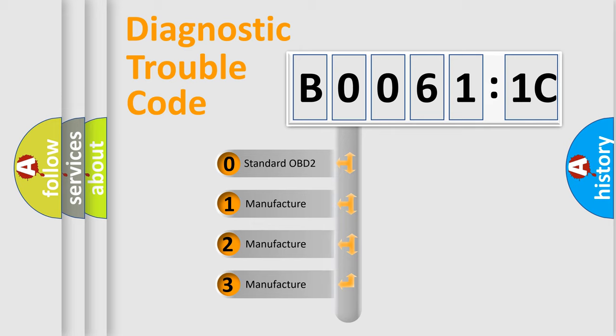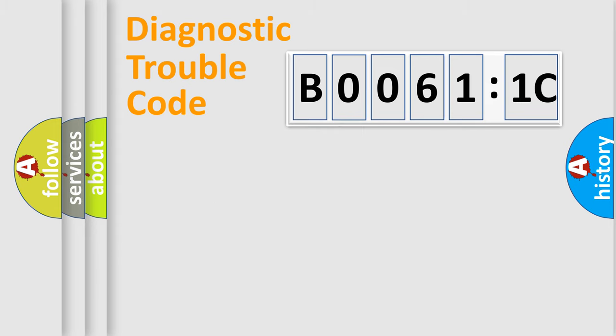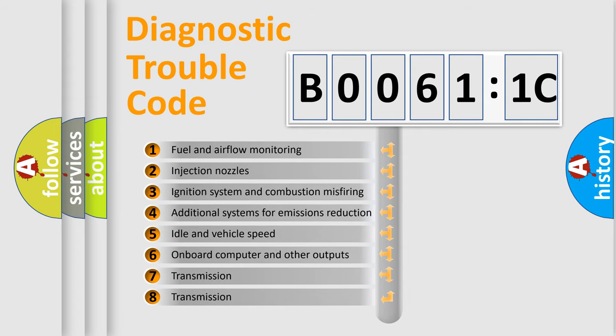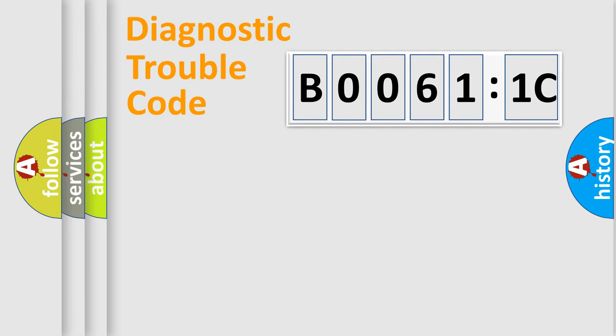If the second character is expressed as zero, it is a standardized error. In the case of numbers 1, 2, 3, it is a manufacturer-specific error. The third character specifies a subset of errors. The distribution shown is valid only for the standardized DTC code. Only the last two characters define the specific fault of the group.